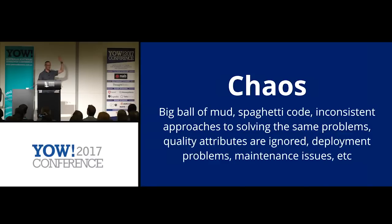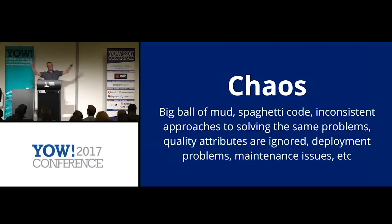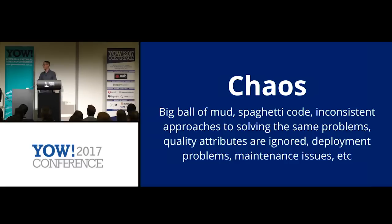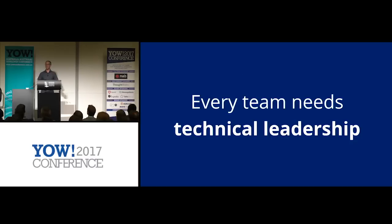Anybody here working on a big ball of mud? The rest of you are fibbing. Spaghetti code systems — you get projects with inconsistent approaches to solving all sorts of different stuff: logging, session handling, whatever. Performance issues, scaling issues, security issues, things that are harder to deploy and look after. That's what software architecture lets us solve. And for me, I like to boil architecture down to its essence: software architecture is about technical leadership. And every team needs technical leadership.